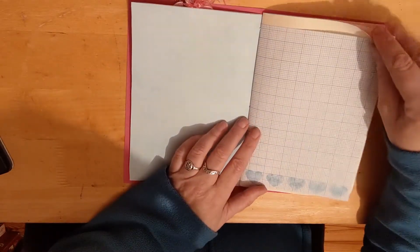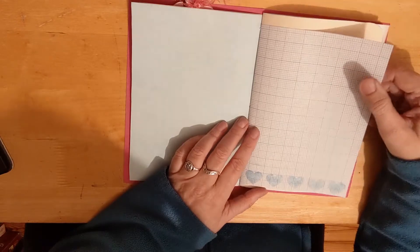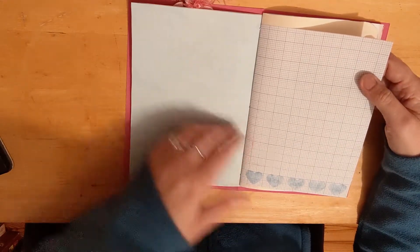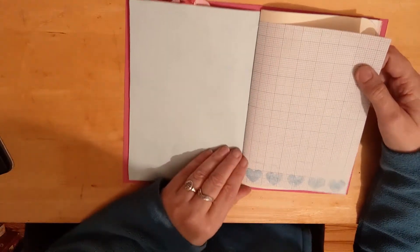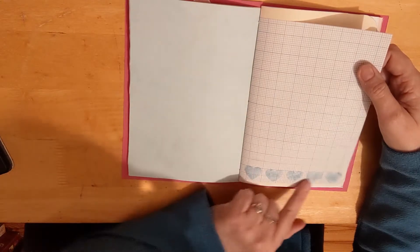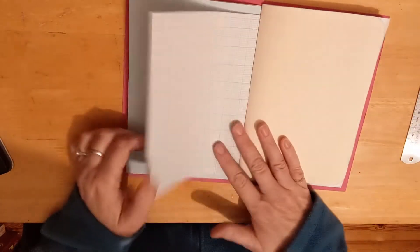Then this is graph paper. The girl that I'm doing it for loves maths and she is actually studying maths, so I said I'd put in some graph paper for her with some little stenciled hearts.